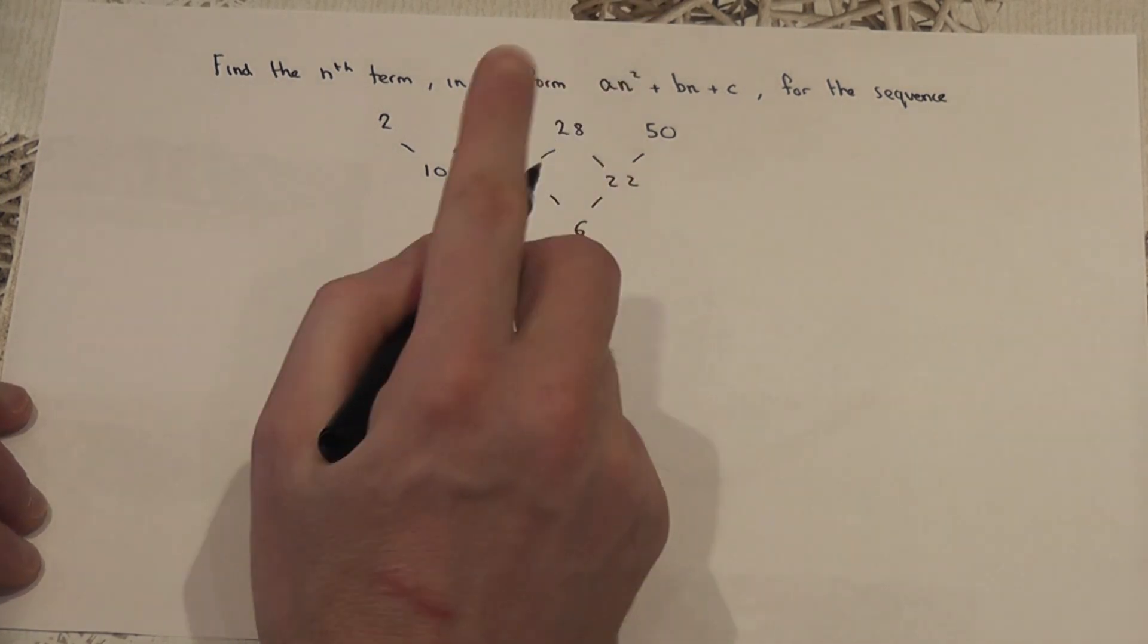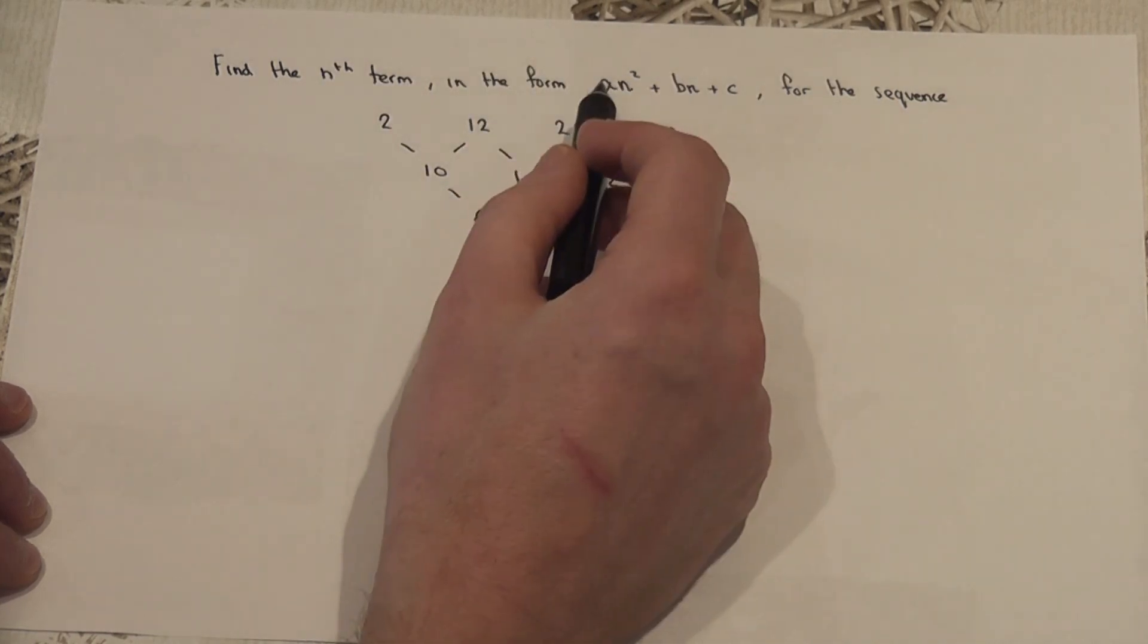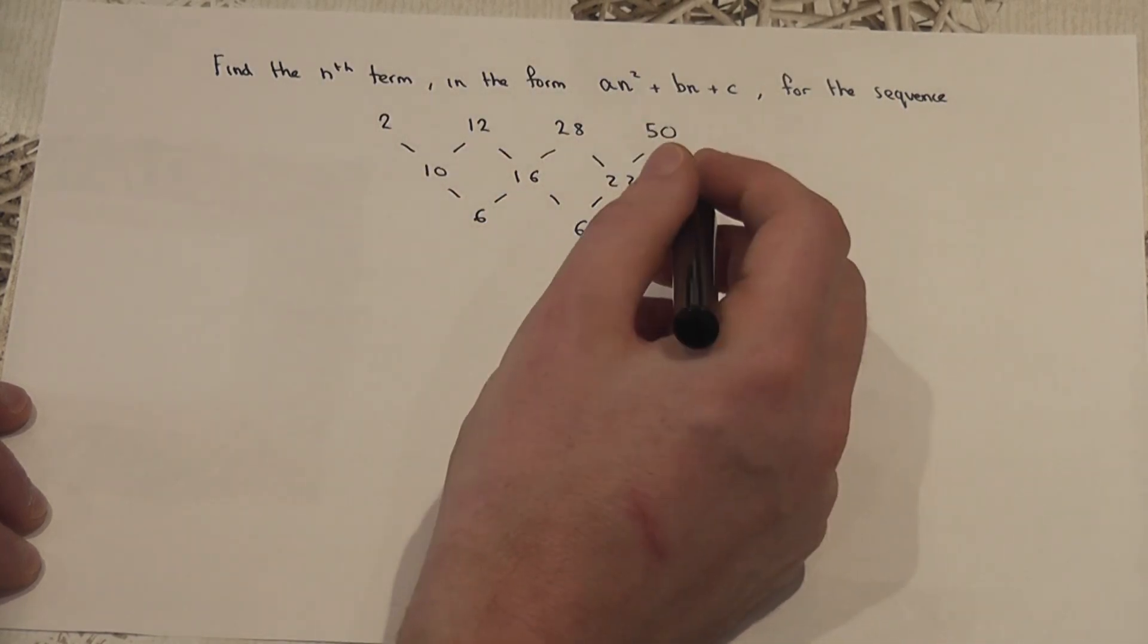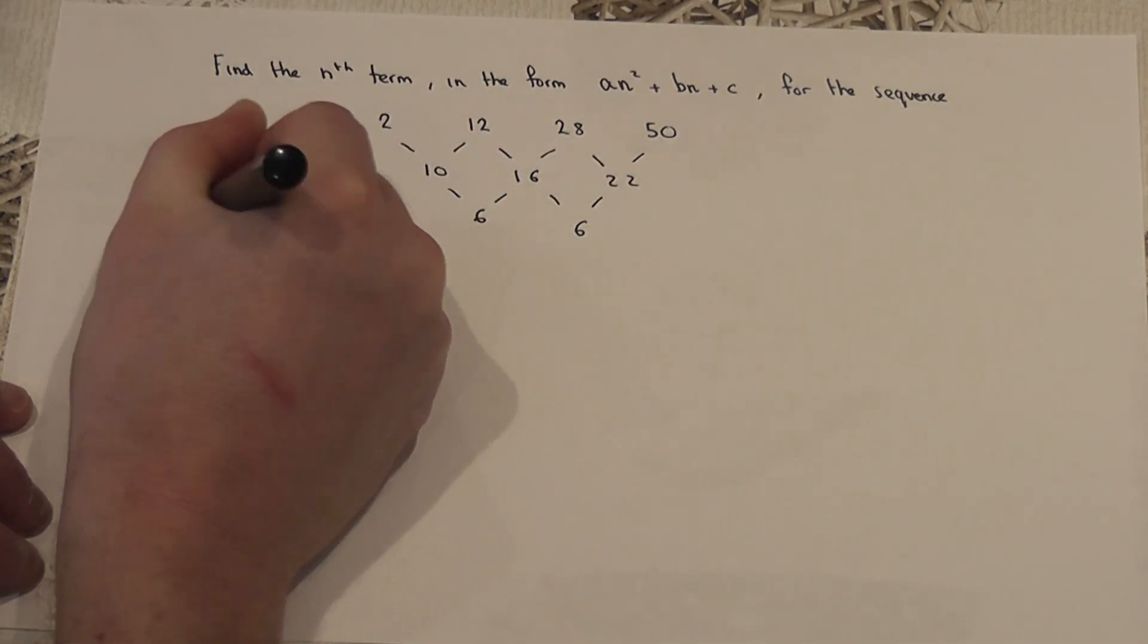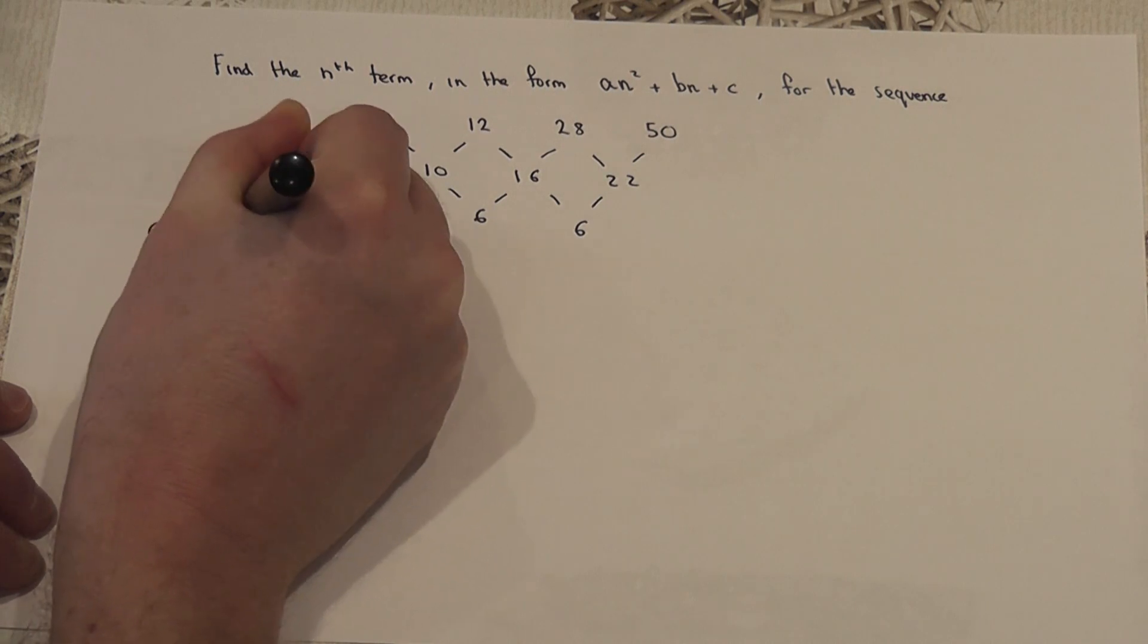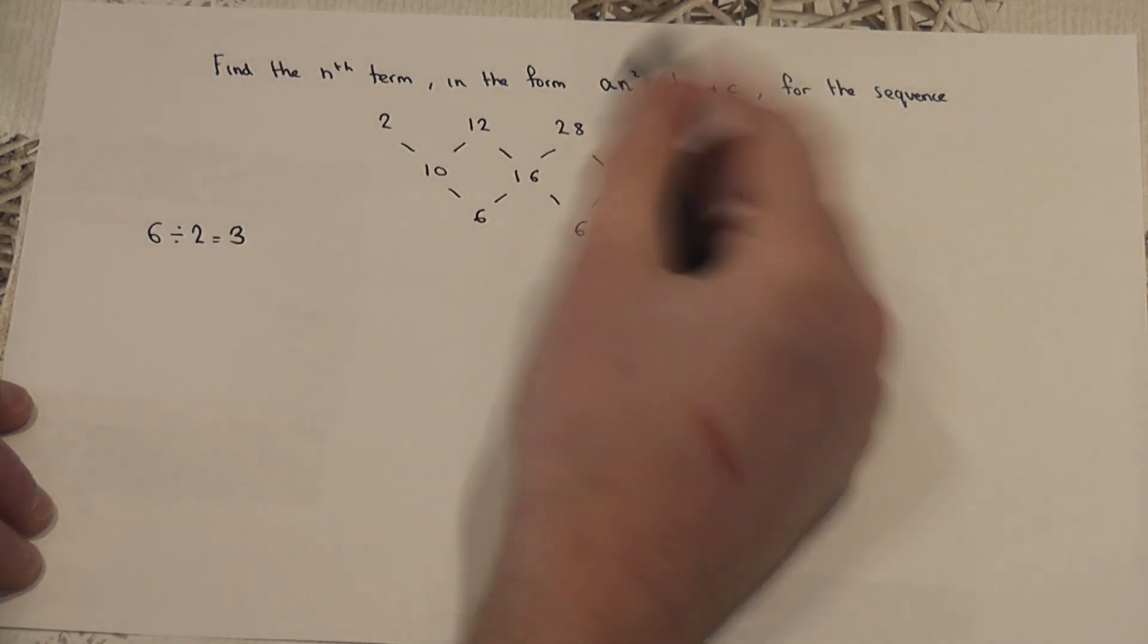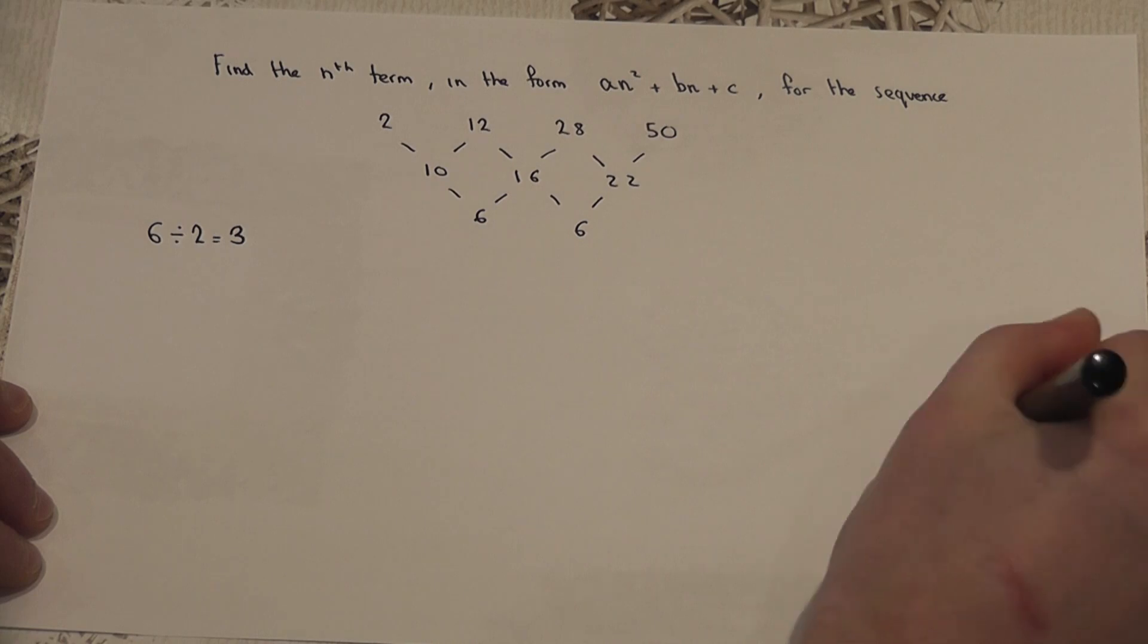Now then, this gives us almost straight away the value of a. But to find a, we have to do the second difference and then halve it. So, 6 divided by 2 equals 3. So, a equals 3.